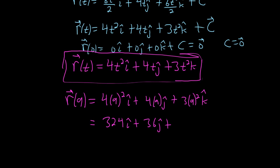So that's 243 k hat. So this would be the position vector at t equals 9 seconds.